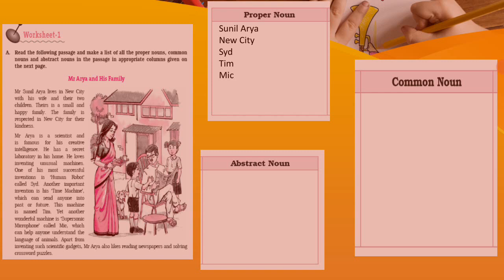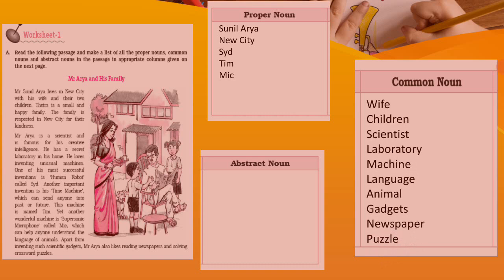Second — common nouns. Common nouns are those names which are used in common by everyone of the same class or group. A class or a group — every member uses that name. I have found some common nouns here: wife, children, scientist, laboratory, machine, language, animal, gadgets, newspaper, puzzle. These are some common nouns you can find here.